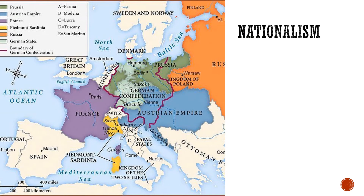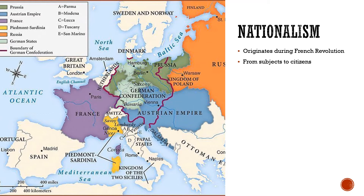One of the things that conservatives really hate in the 19th century is nationalism, which has been a powerful movement that came out directly of the French Revolution. We talked about how it transformed the people of France from subjects — meaning subject under the king — to citizens of France. When people were fighting in the wars during the French Revolution, they were fighting as citizens, doing their duty to France, not their duty as subjects to the king. And that is a really big difference.